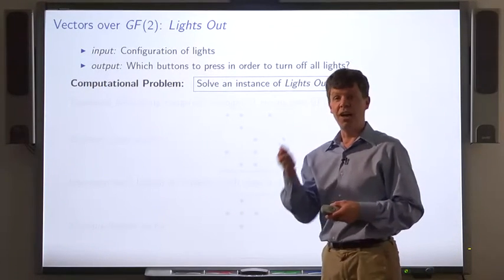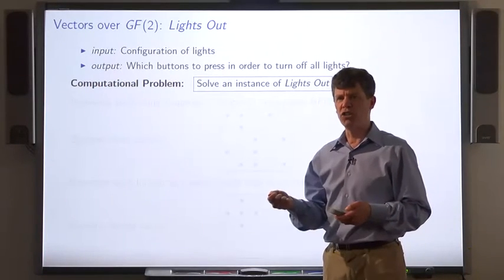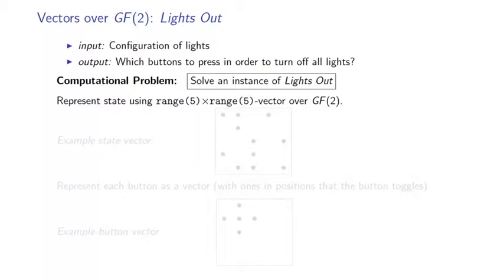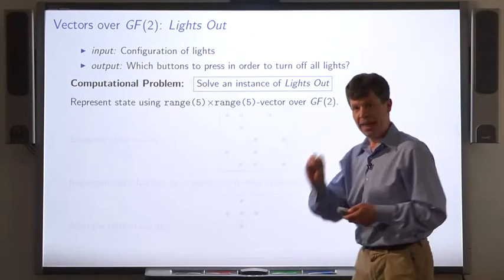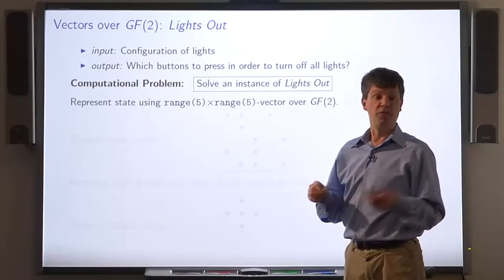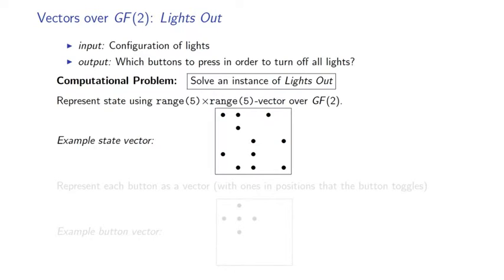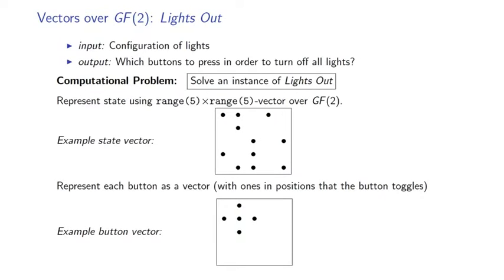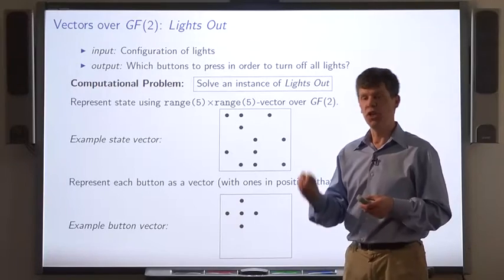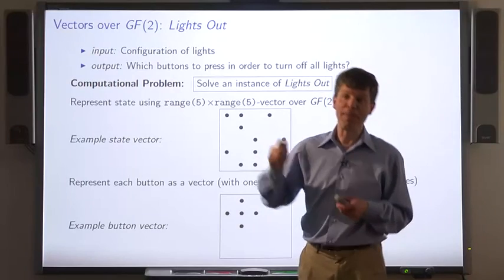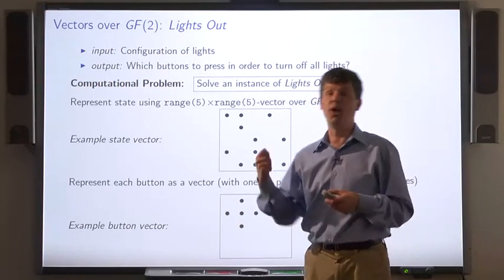Given a configuration of lights, we want to figure out what sequence of button pushes will turn off all the lights. We're going to represent the state of Lights Out using a vector — there's going to be an entry in the vector for each light. So for five-by-five Lights Out, that means there are 25 entries, and these are vectors over GF2. We can also represent each button as a vector over GF2, with ones in exactly the positions that are toggled when we push that button. Remember that in GF2, adding one means flipping a bit: if you add one to a one, it turns it into a zero; if you add one to a zero, it turns it into a one.